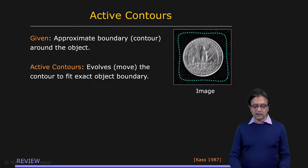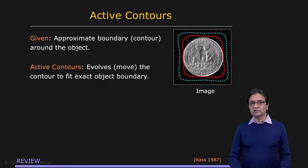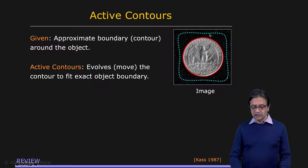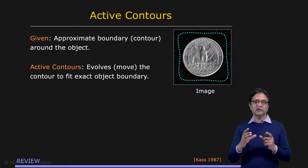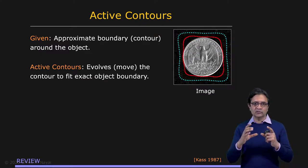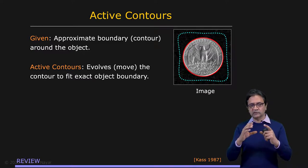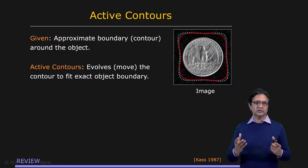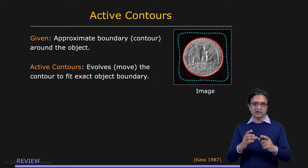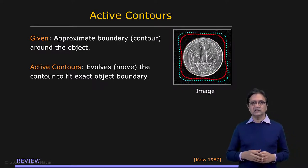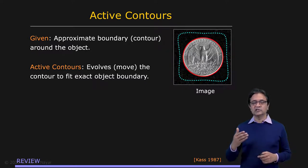We also talked about active contours, or snakes. In this case, you have the same object. We initialize a contour — the blue contour shown right here — and it's able to automatically deform itself to latch onto the boundary of the object. Once it latches onto the boundary of the object, the image has been segmented and you have essentially found a meaningful segment.